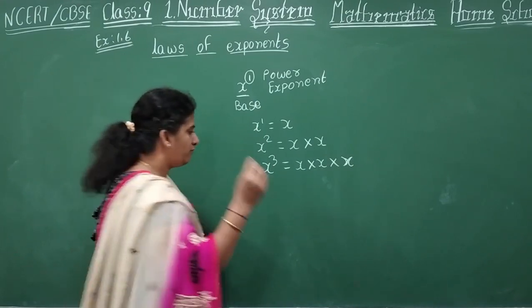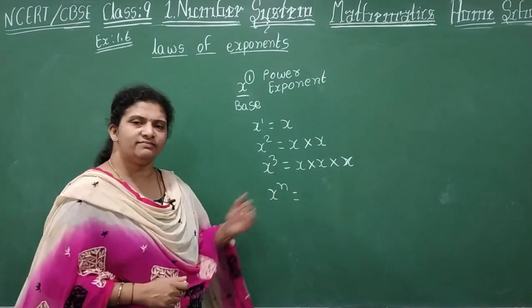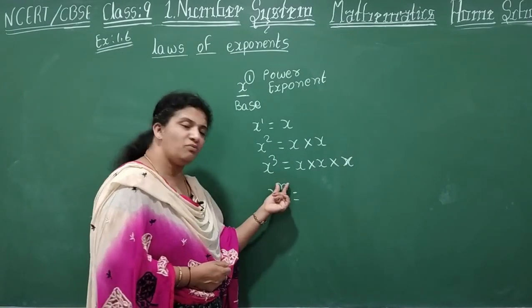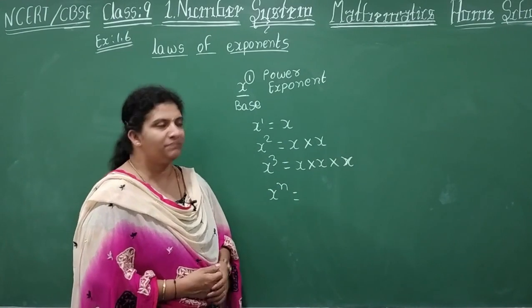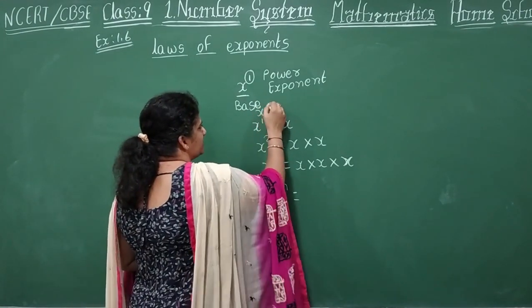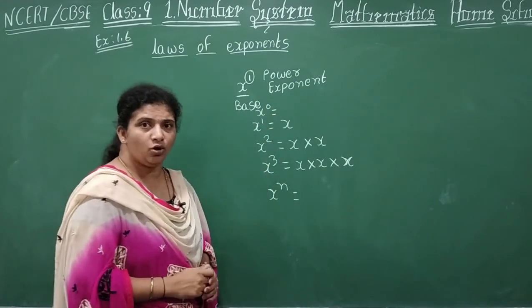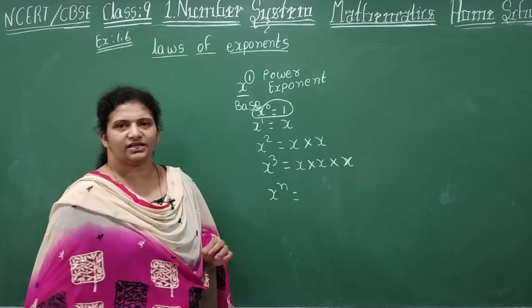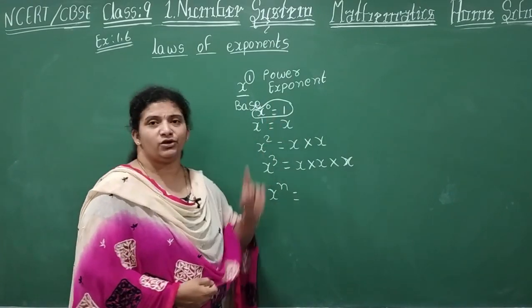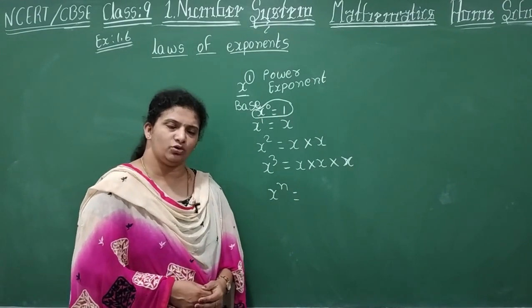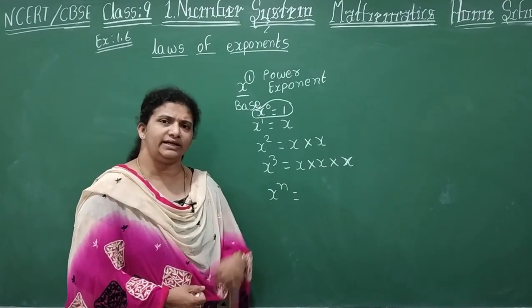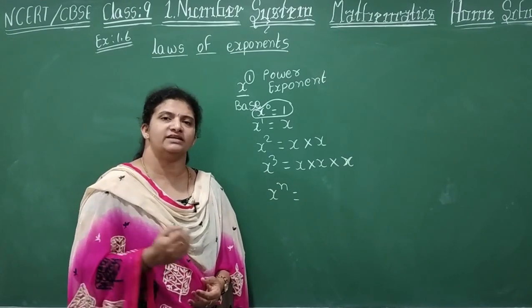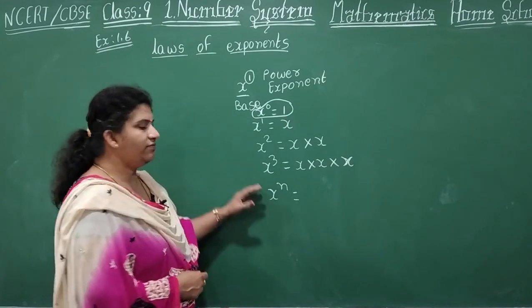So if you write X power n, how many times is X multiplied? Whatever the n value, that many times your X is multiplied. Now, what is X power 0? X power 0 is always 1. Try to remember, children — X power 0. Anything power 0: not only X — 5 power 0 is 1, 10 power 0 is 1, 50 power 0 is 1, 39 power 0 is 1. Any number whose power is 0, its value is 1.